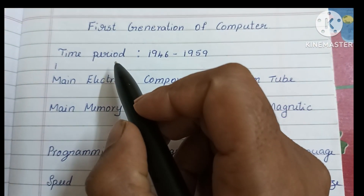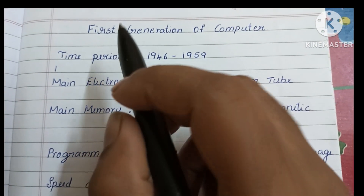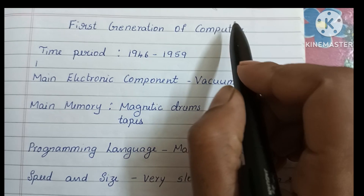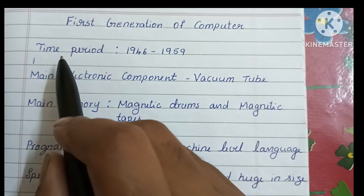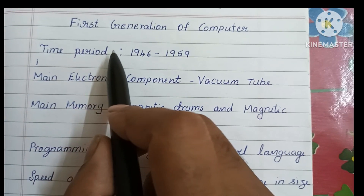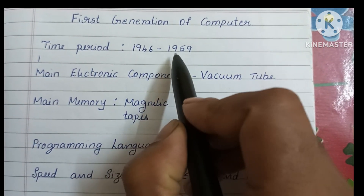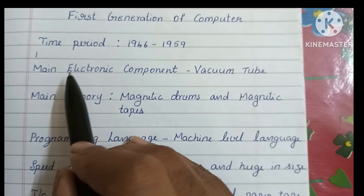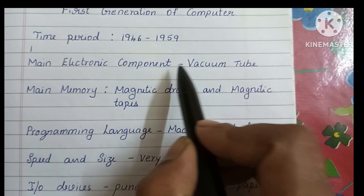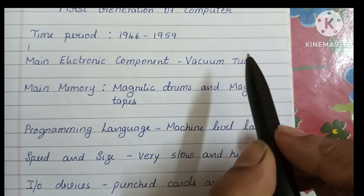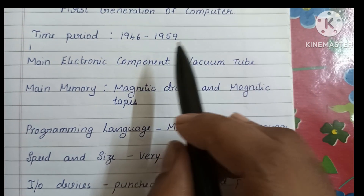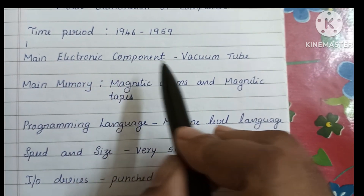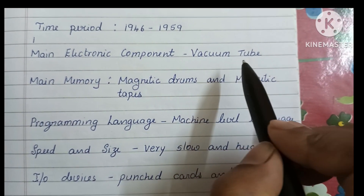In this video we are going to learn the characteristics of the first generation of computers. The time period is 1946 to 1959. The main electronic component used in first generation computers is the vacuum tube.